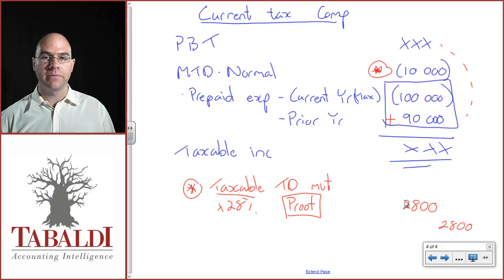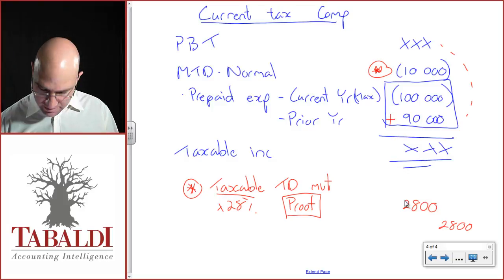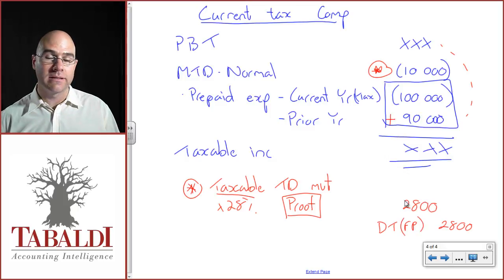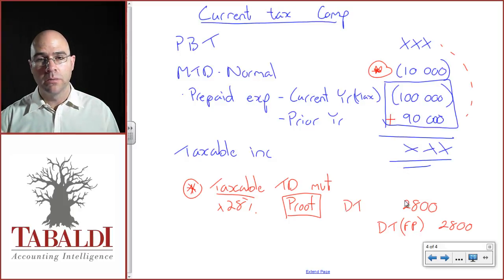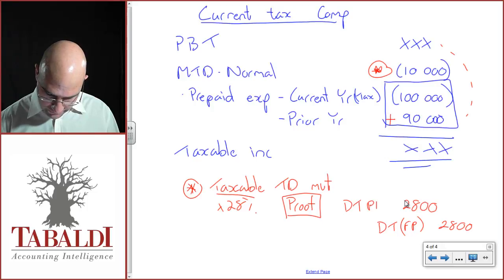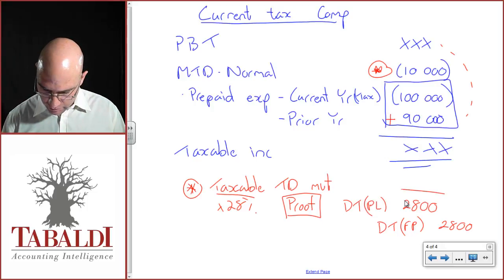I said it's a taxable temporary difference. Therefore, it's going to result in a future tax payment, and that's going to mean a deferred tax liability movement. Therefore, I credit deferred tax financial position, make the liability bigger on the credit side. The opposite side of the journal, the underlying movement went through profit and loss. Therefore, deferred tax expense will go through profit and loss.